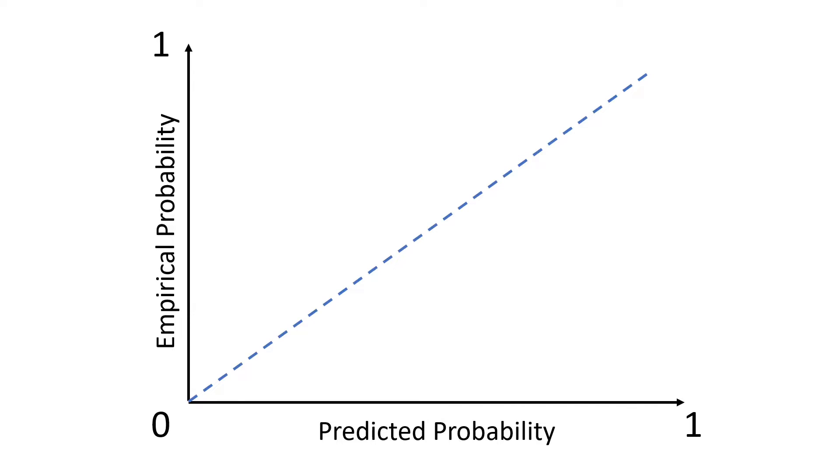And to better understand this concept, I depicted here a graph where on the x-axis we have the predicted probabilities by the model and on the y-axis we have the empirical probability of the samples. So, if the model was perfectly calibrated, we would expect that, for instance, 30% of the samples that got a predicted probability of around 0.3 to be positive.